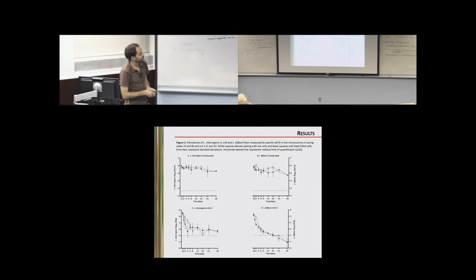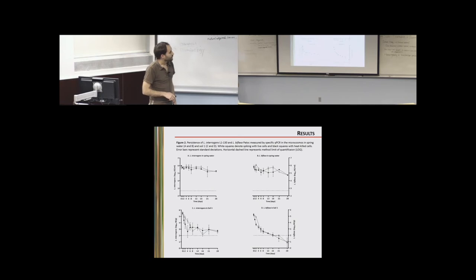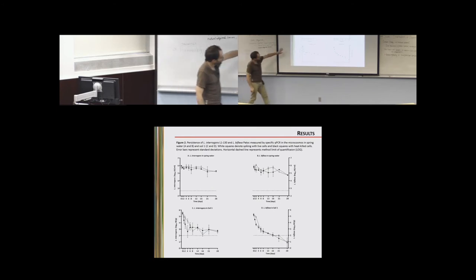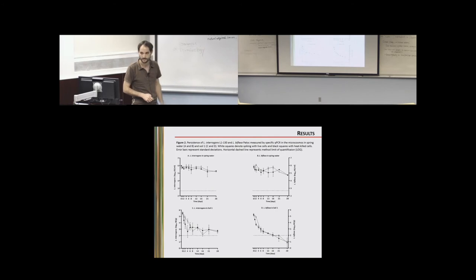For the microcosms with soil and water — in this column you see Leptospira interrogans, and here Leptospira biflexa. This is spring water, and this is soil. In spring water, DNA from both live and dead cells seems to persist for a long time — up to 28 days we only lost around one log of the concentration. The results for biflexa were a little irregular but pretty similar. What was pretty shocking was a very steep decrease in DNA concentration in the soil tested — after six to eight days we had lost around three logs of the initial concentration, then a stabilization around 10 to the third or 10 to the second, near the limit of quantification.